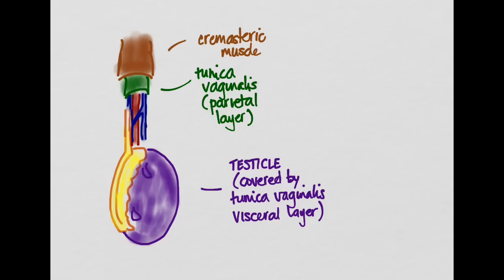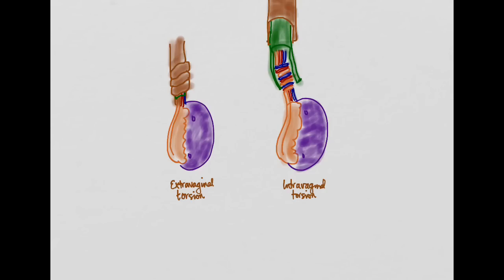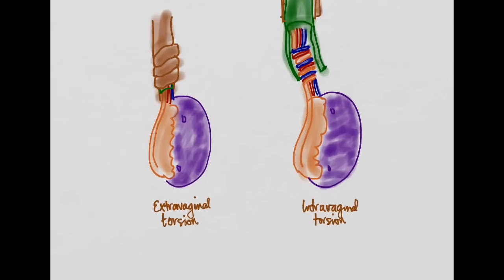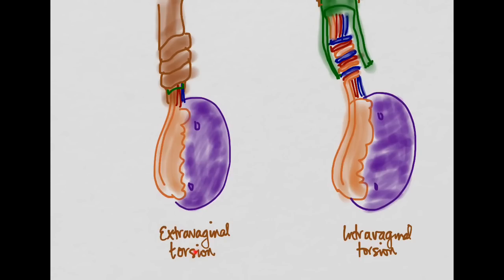Let's look at the abnormal anatomy. So here I've drawn two torsed testicles. There's extravaginal and intravaginal torsion, and what we're talking about is this parietal tunica vaginalis. In the extravaginal one, the torsion, the twisting part, happens outside of the tunica vaginalis. You can see it here - even the cremasteric muscle, the entire spermatic cord is getting twisted.